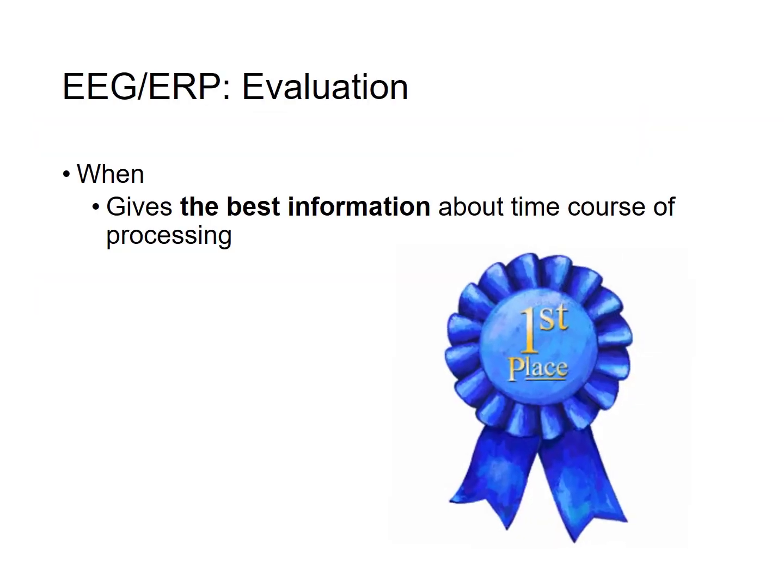So when we evaluate EEG and ERP about how well it tells us when a process is occurring in the brain, it is number one. It gives us the best possible chance of capturing how quickly a process begins to be carried out in the brain.